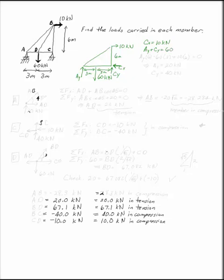AY plus CY equals 60. These are just your equations of equilibrium, and if I take the sum of the moments at C, I get AY times 6 minus 60 times 3 plus 10 times 6 equals 0, so AY has to be equal to 20 kN and CY is equal to 40.